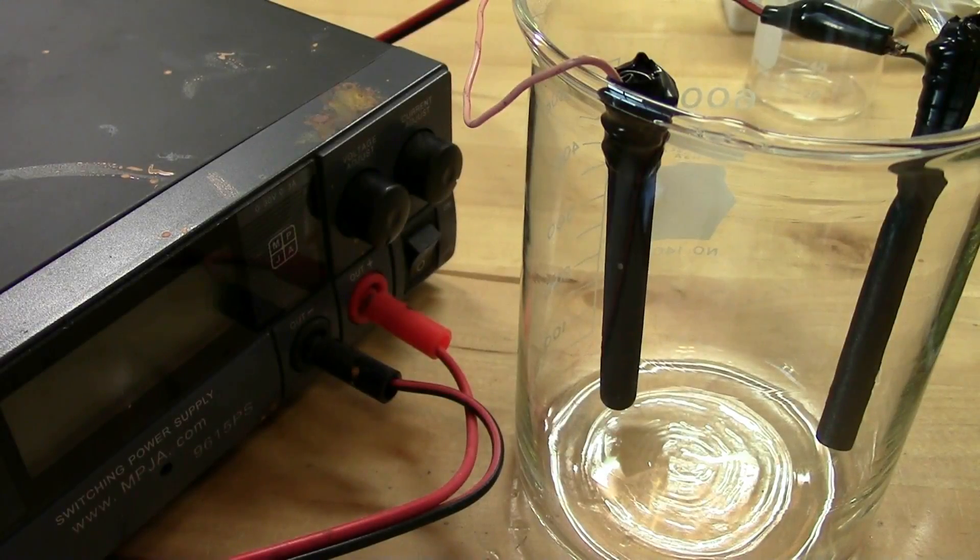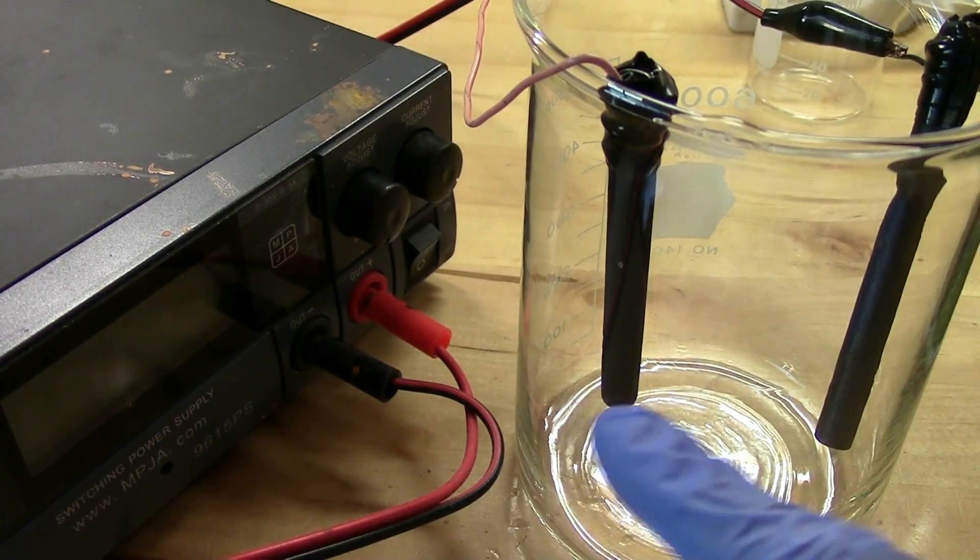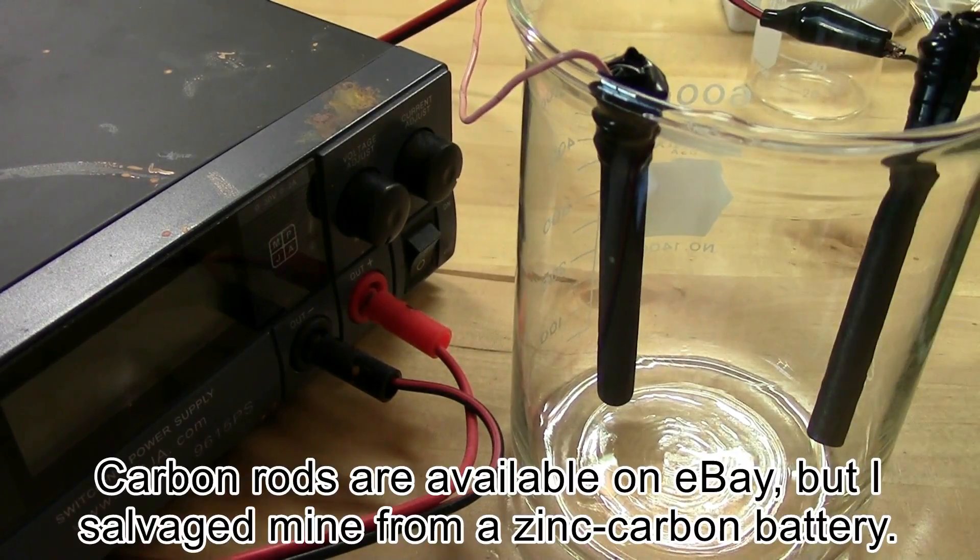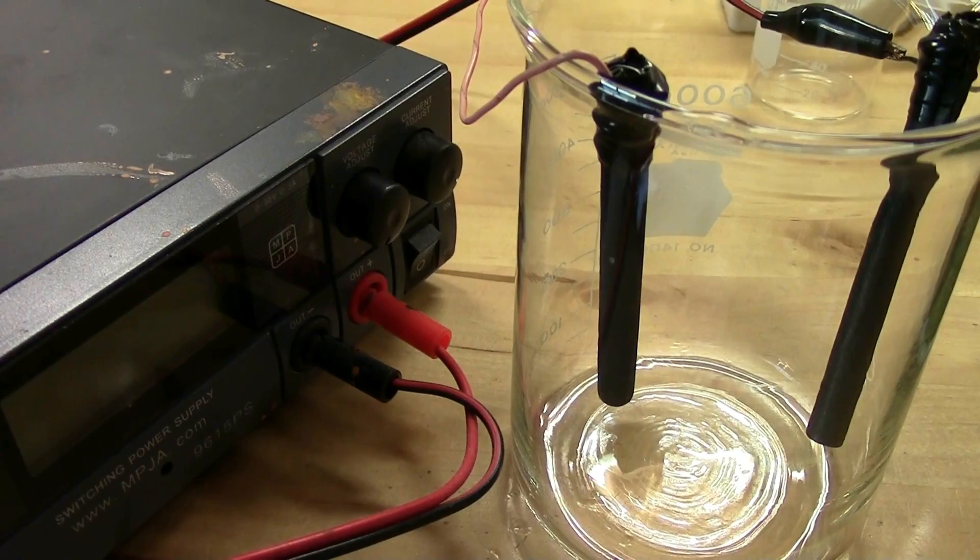It turns out there's a much more abundant source of hydrogen: water. Water is H2O, so it's got plenty of hydrogen all around us. It's very easy to extract via electrolysis. This is just a beaker with two carbon rods hooked up to my power supply. Now we just need water - a jug of distilled water that I bought from Walmart.